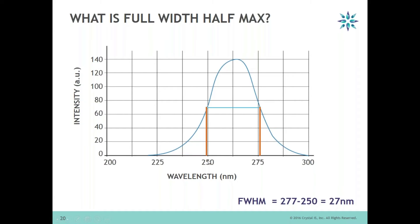In this case, we are talking about approximately the high of 277 and the low of 250. So the full width half maximum in this case would be approximately 277 minus 250, which is about 27 nanometers.